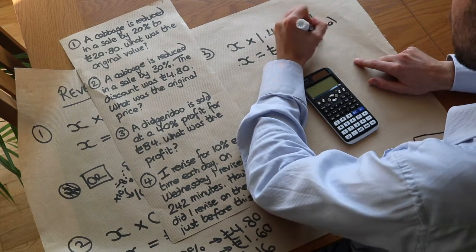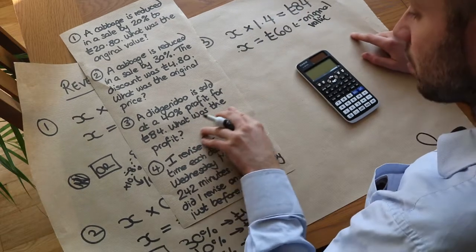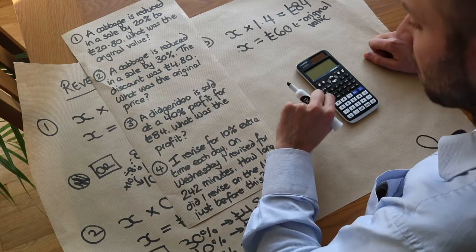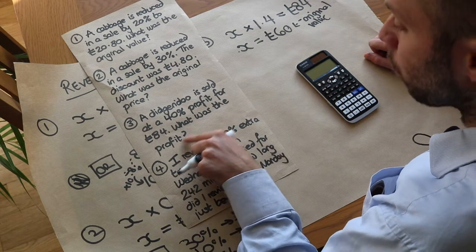But we have to check. Have we actually answered the question? Did it ask for the original value of the didgeridoo before the 40% profit was added on to get to £84? No. It actually was asking for what the profit was.